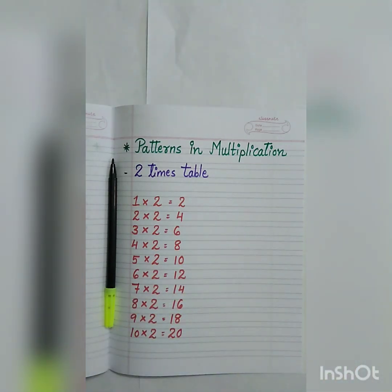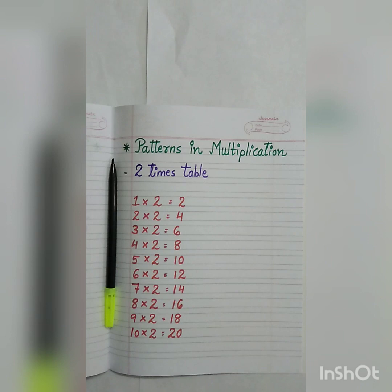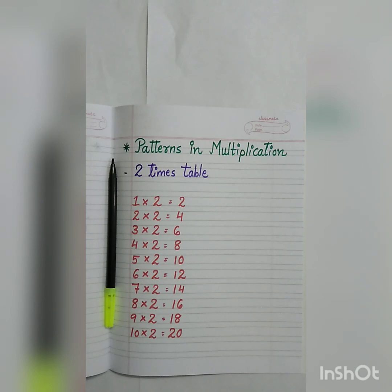You all know the tables — you have learned the tables in the previous class. And do you know each table has some pattern in it? Do you remember the commutative property, which tells us about the order of the multiplicand and the multiplier? Even if the order of the multiplicand and the multiplier is changed, the product remains the same.